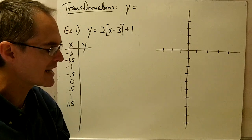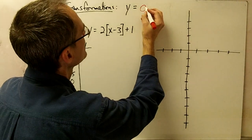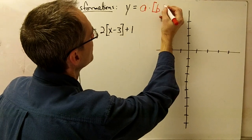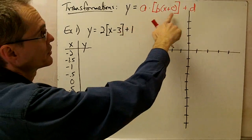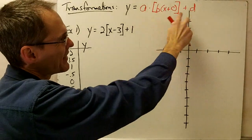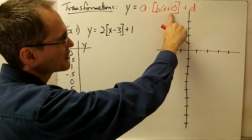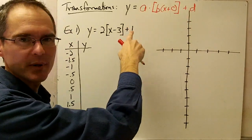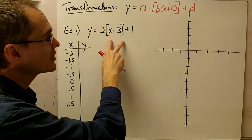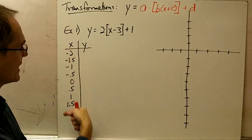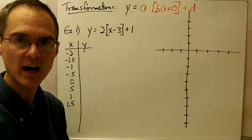Now let's talk about transformations to the greatest integer function. In graphing form, it looks like: a times greatest integer of (b times x plus c) plus d. This same graphing form applies to all our other functions. However, for the step function I don't typically use graphing form — instead I fill in enough numbers on my x-y table to get a sense of the pattern, then fill in the rest on the graph.